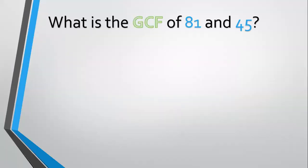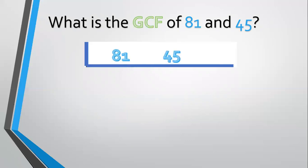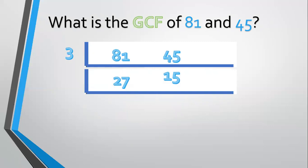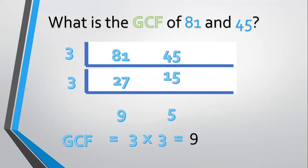Another example — how about 81 and 45? List them: 81 and 45. Both can be divided by 3. 81 divided by 3 equals 27. 45 divided by 3 equals 15. Can we divide again by 3? 27 divided by 3 equals 9. 15 divided by 3 equals 5. Now 9 and 5 have no more common factor. Therefore, the GCF of 81 and 45 is equal to 9: 3 times 3 equals 9.